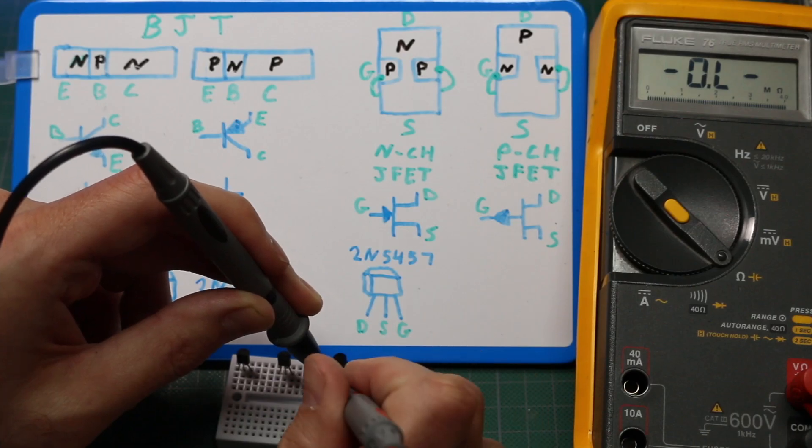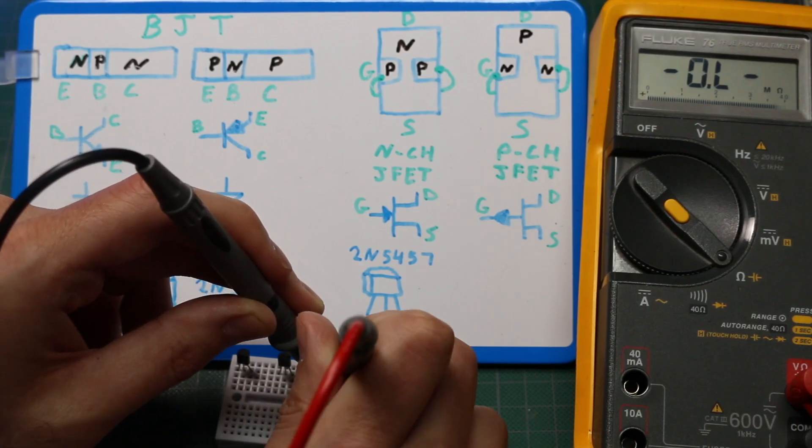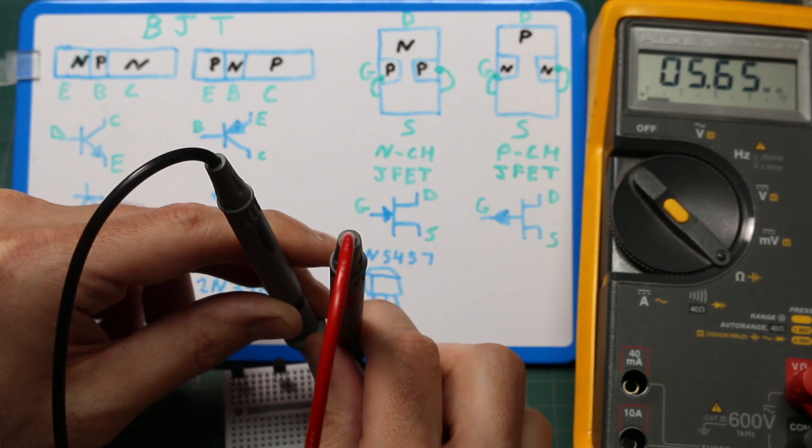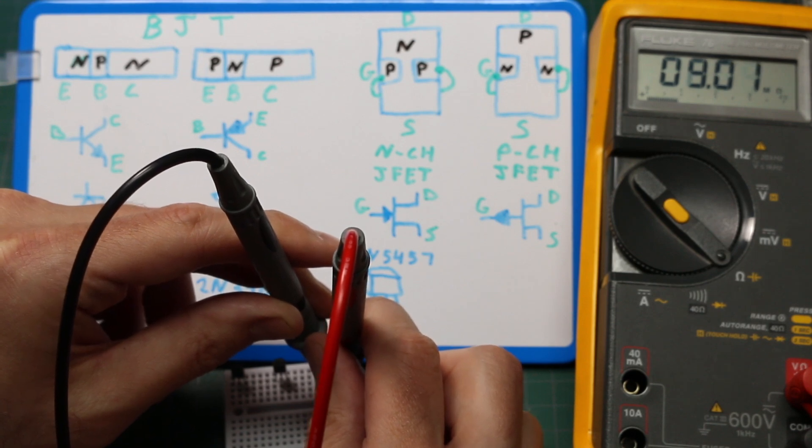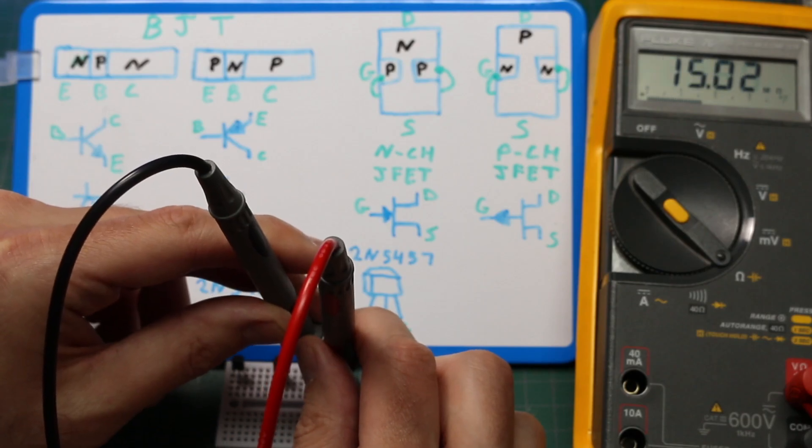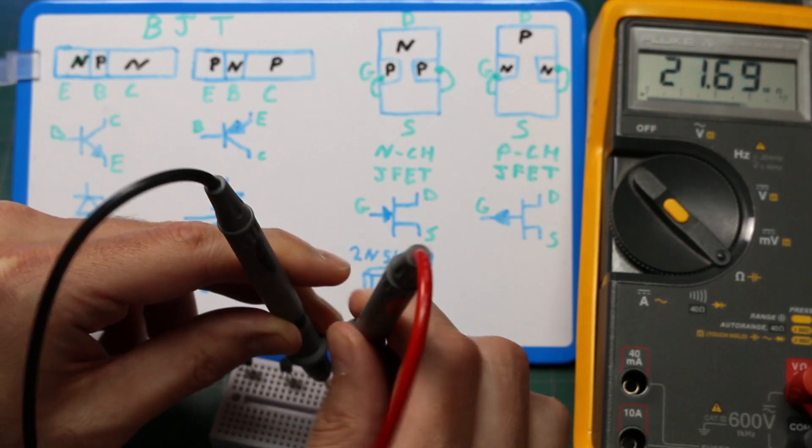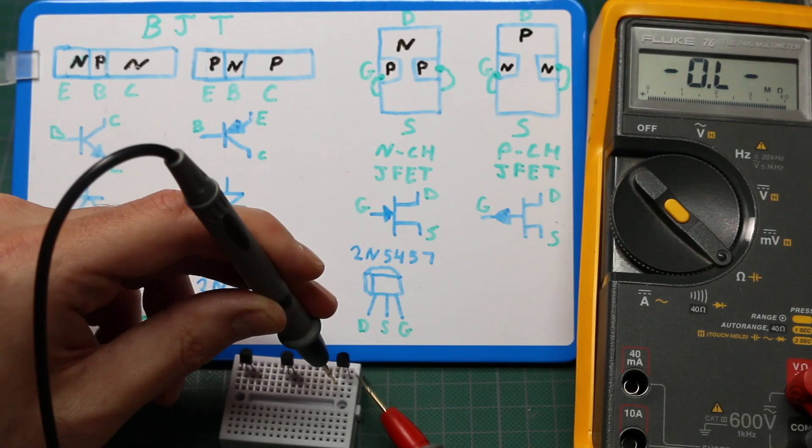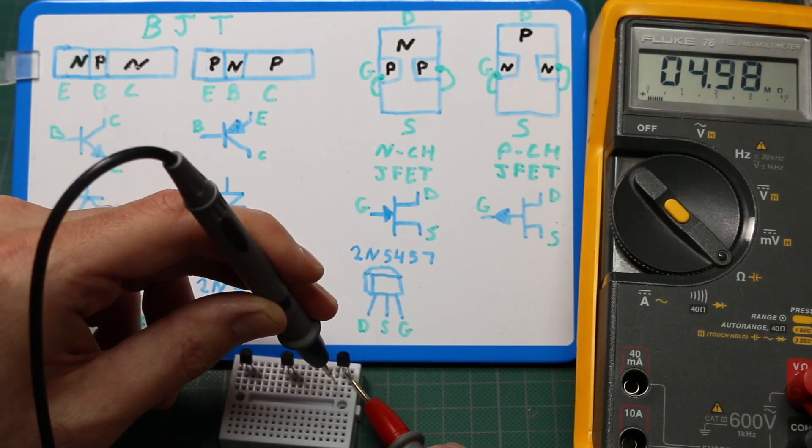If I am not touching the gate and I just try to measure resistance, it could be drifting all over the place. Right now we have eight or nine megs because the gate is just floating.